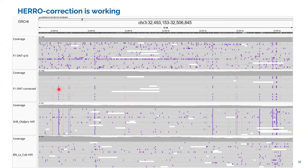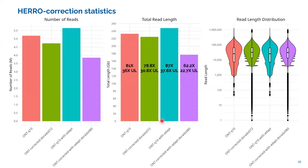The correction is working very well — you can see the variance coming from the SHR, for example. However, there is a cost: you lose some reads during correction. After adaptive sequencing, updating to a new version of Dorado led to a higher number of reads lost during correction, so there may still be problems in the Dorado correct command.